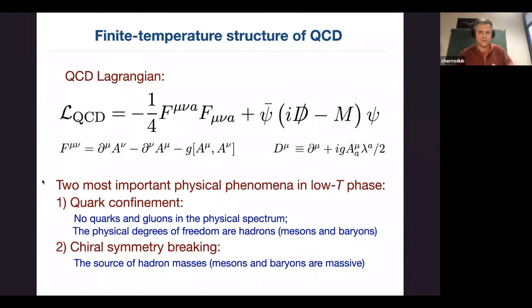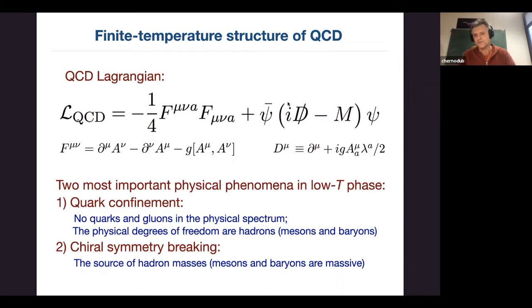QCD is a very simple theory if you write it in one line — it's just the Lagrangian. You have the gluonic part, which in the case of QCD is SU(3) gauge symmetry, and then the quark part written in symbolic form — massive Dirac fermions with seed masses interacting minimally with the gauge field, which is the gluon field carrying a color index running from one to eight.